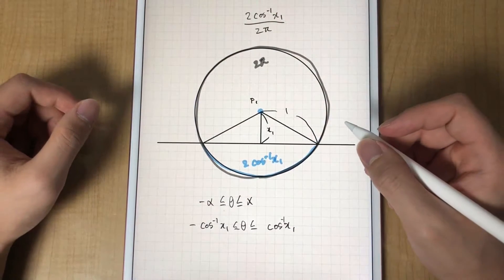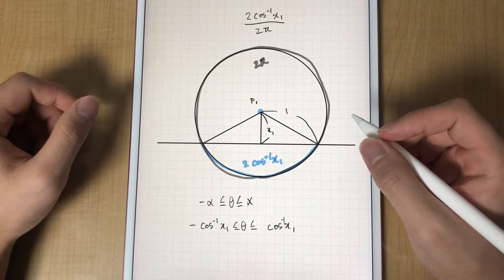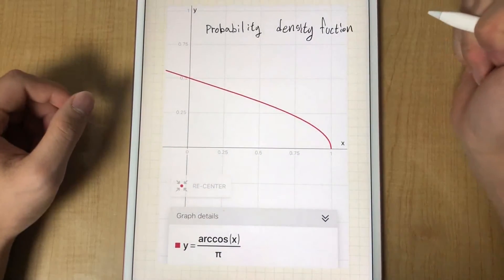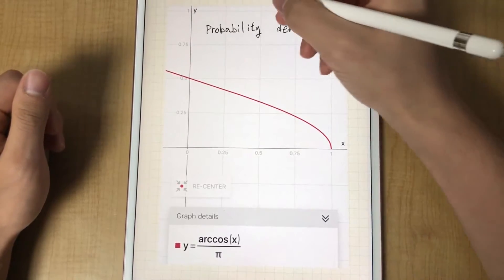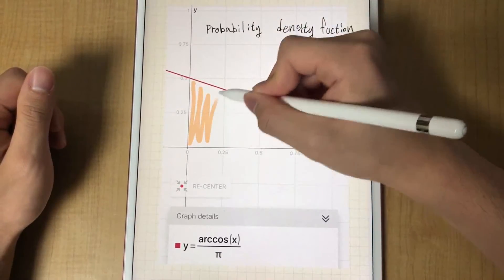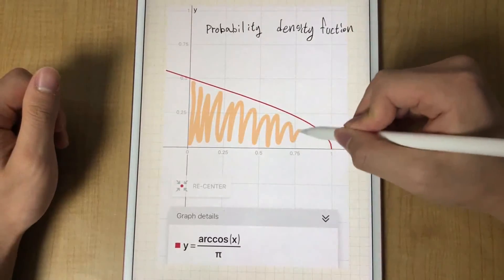If we draw the probability density function, thanks Photomath, the probability density function looks like this. Now all we have to do is calculate this orange area and we'll get the probability.